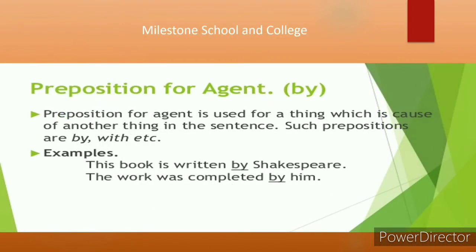Prepositions for agent — 'agent' means a doer, a person or thing that is the cause of an action. Such prepositions are 'by' and 'with.' For example: 'The book is written by Shakespeare' — here 'Shakespeare' is the agent or person who wrote the book. 'The work was completed by him' — 'him' is the agent or performer of the work.